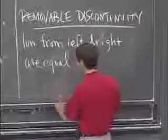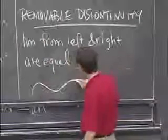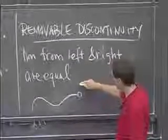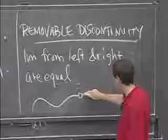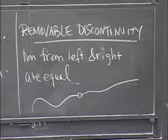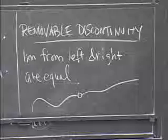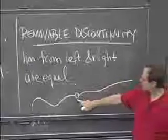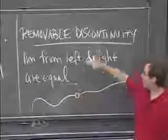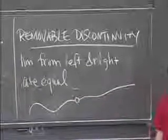So a picture of that would be you have a function which is coming along like this, and there's a hole maybe where, who knows, either the function is undefined or maybe it's defined up here. And then it just continues on. All right, so the two limits are the same. And then of course the function is begging to be redefined so that we remove that hole. And that's why it's called a removable discontinuity.